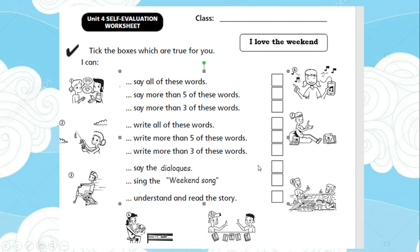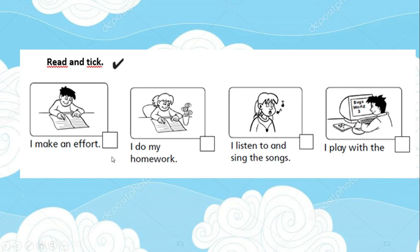'Write more than three of these words' — si puedes escribir más de tres, un ticket. 'Say the dialogue' — puedes decir los diálogos que vimos en la unidad; si los pudiste repetir, debes hacer un ticket. 'Sing the weekend song' — si aprendiste la canción y la cantaste, también puedes hacer un ticket. 'Understand and read the story' — comprender y leer la historia. ¿Te acuerdas la historia de Amazing Max — el sorprendente Max? Si la entendiste y pudiste leerla, entonces debes hacer un ticket. Realiza un ticket en todas las acciones que has realizado durante la unidad.